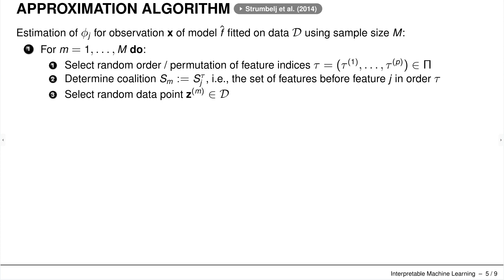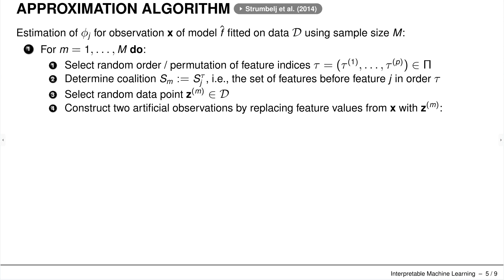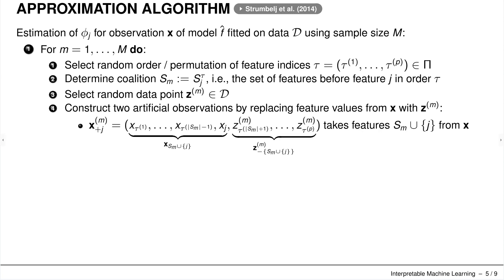We select one random data point from the whole dataset and construct two artificial observations by replacing some feature values from x with that random data point z. The first artificial observation has the coalition features S and feature j taken from x (unchanged), while the features in minus S are replaced by z. This gives the observation with feature j included in the coalition.